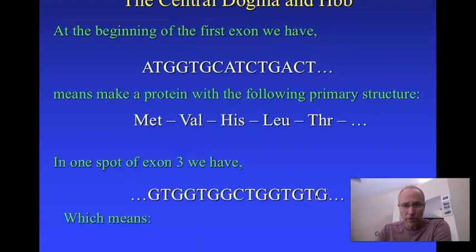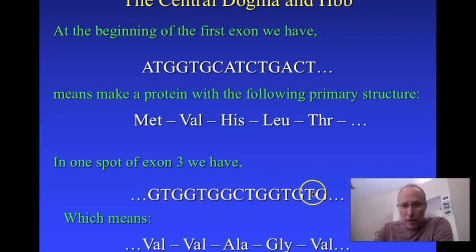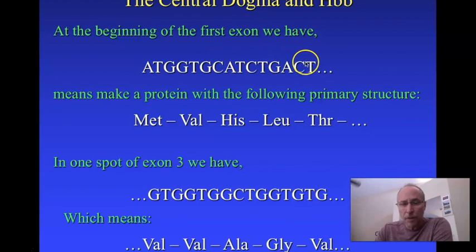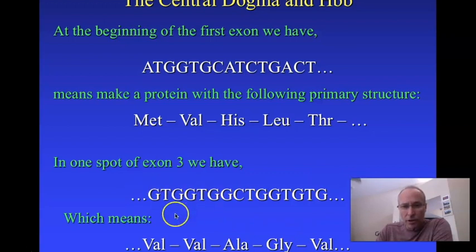Do you see the pattern? Five amino acids here correspond to 15 nucleotides. Every place where the sequence GTG appears, there's a valine. Each set of three nucleotides codes for one amino acid — that is the genetic code. That's how it is actually read. Each group of three specifies a particular amino acid in the primary structure of the protein.